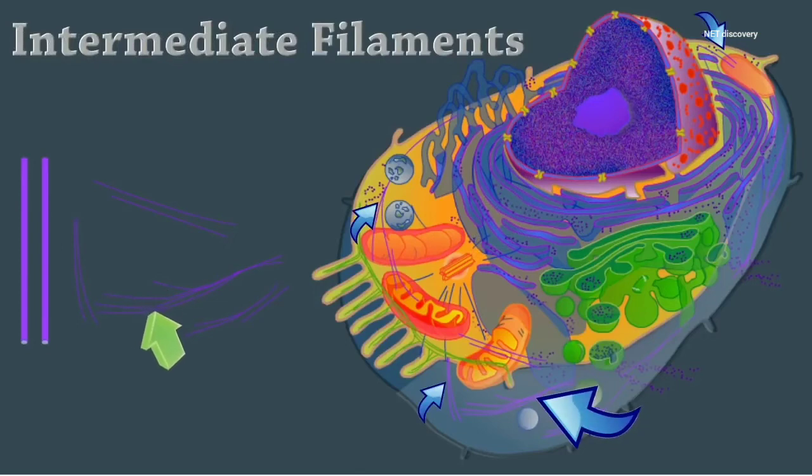Intermediate filaments are protein fibers whose composition varies. These stable cytoskeletal elements resist mechanical forces acting on the cell.